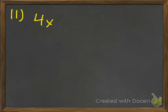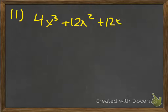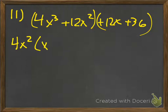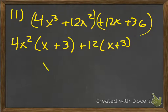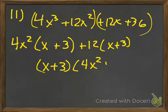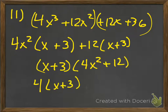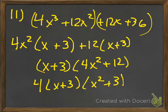The next problem — same idea. Put the first two in parentheses and the last two in parentheses, then take out what you can. From the first group I see 4x squared, so I take that out, leaving x plus 3. Write x plus 3 again. 36 divided by 3 is 12. Write the repeating factor x plus 3, combine the other two: 4x squared plus 12. Take out a 4, leaving x squared plus 3. That's your final answer.